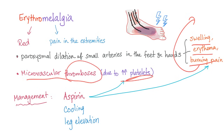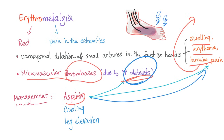Microvascular thrombosis occurs due to the increased number of dysfunctional platelets everywhere. Management of erythromelalgia includes aspirin — both an antiplatelet and a painkiller — cooling to reduce warmth in the legs, and leg elevation to reduce blood flow by gravity.